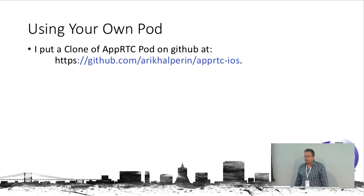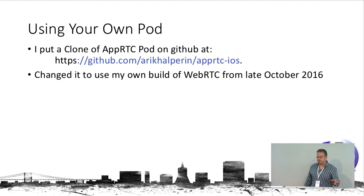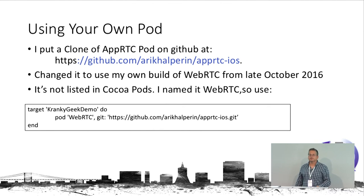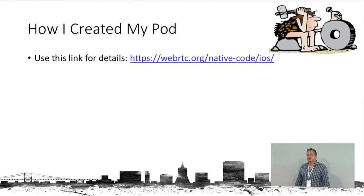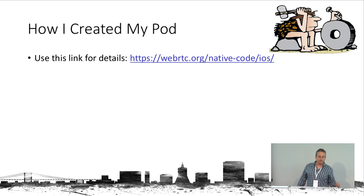I took AppRTC from GitHub and cloned it under rari-calper/appRTC-iOS, then changed it to use WebRTC from last month — the latest code when I prepared the pod. It's not listed in CocoaPods, so in my pod file I put the GitHub path instead of just the pod name. Then I built the WebRTC code. You have a link under webrtc.org native code iOS with an explanation on how to build WebRTC for iOS.